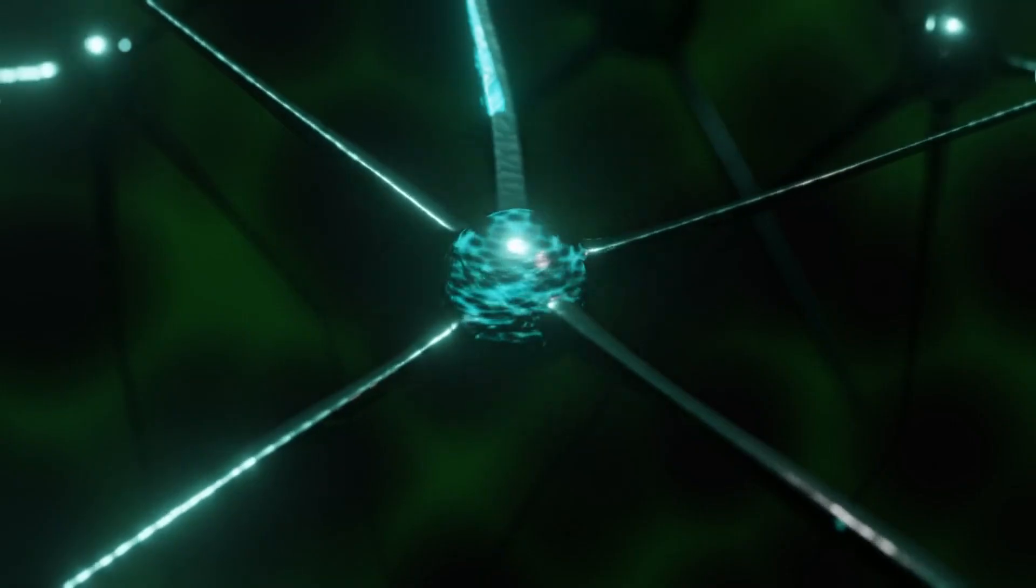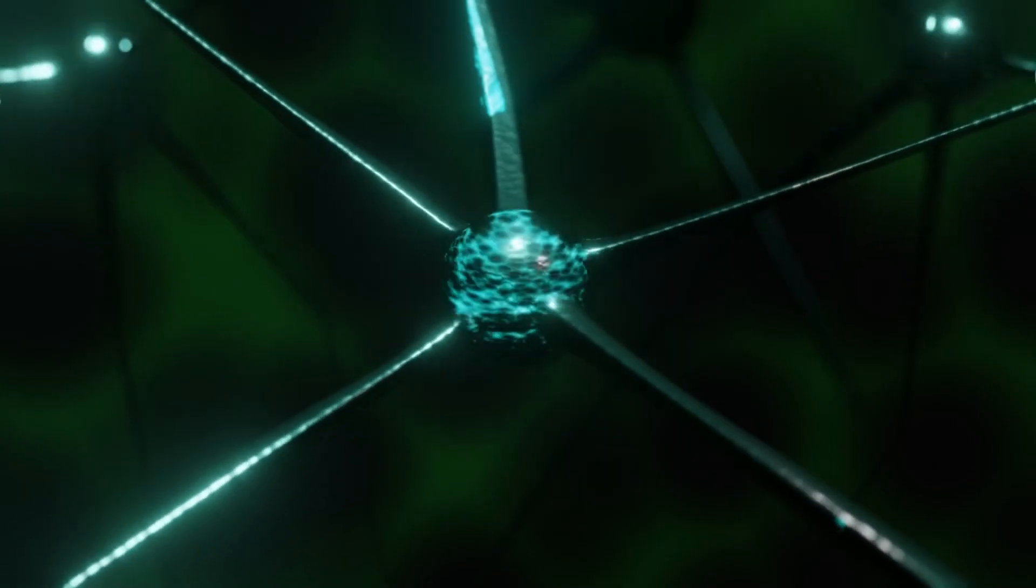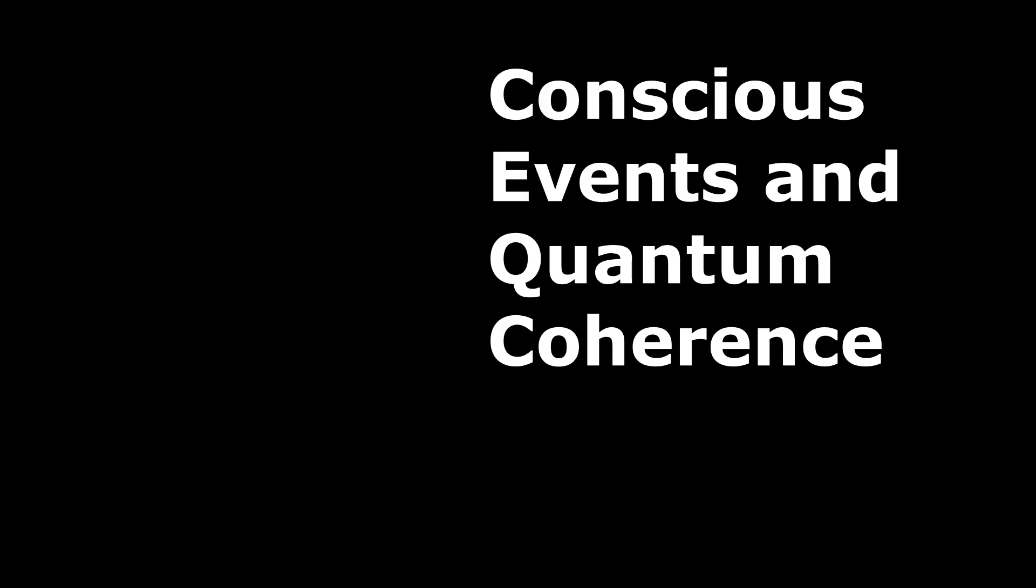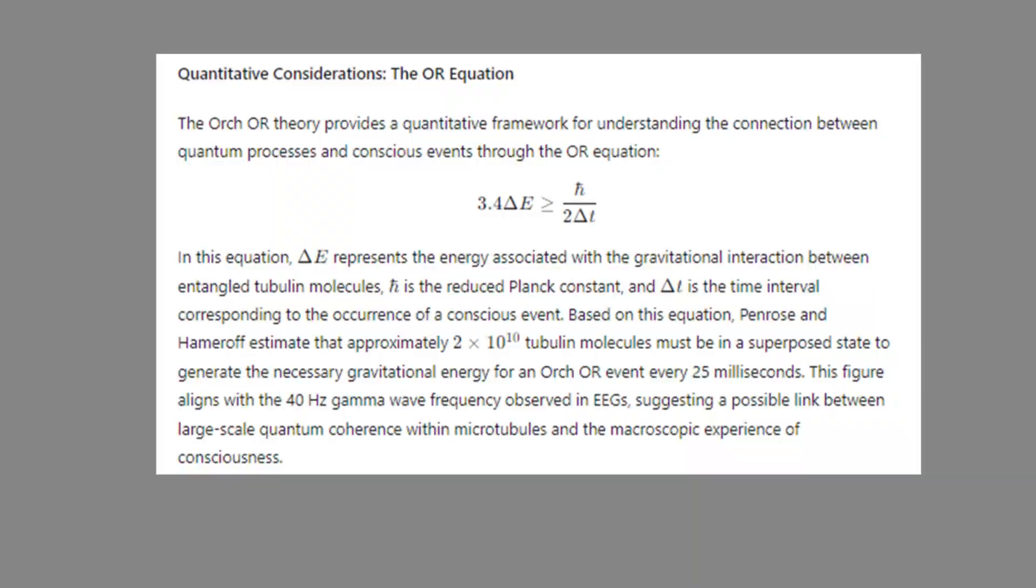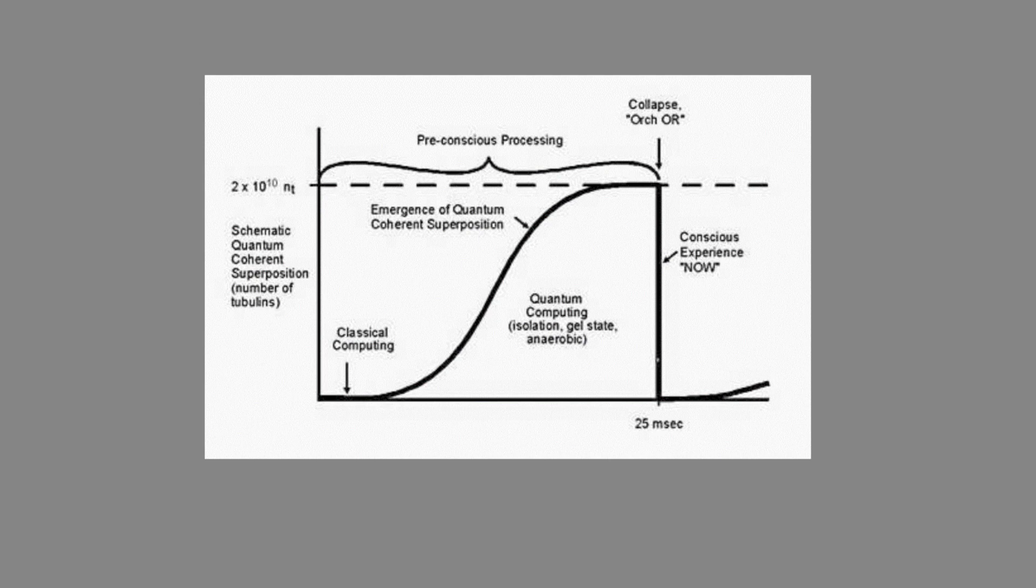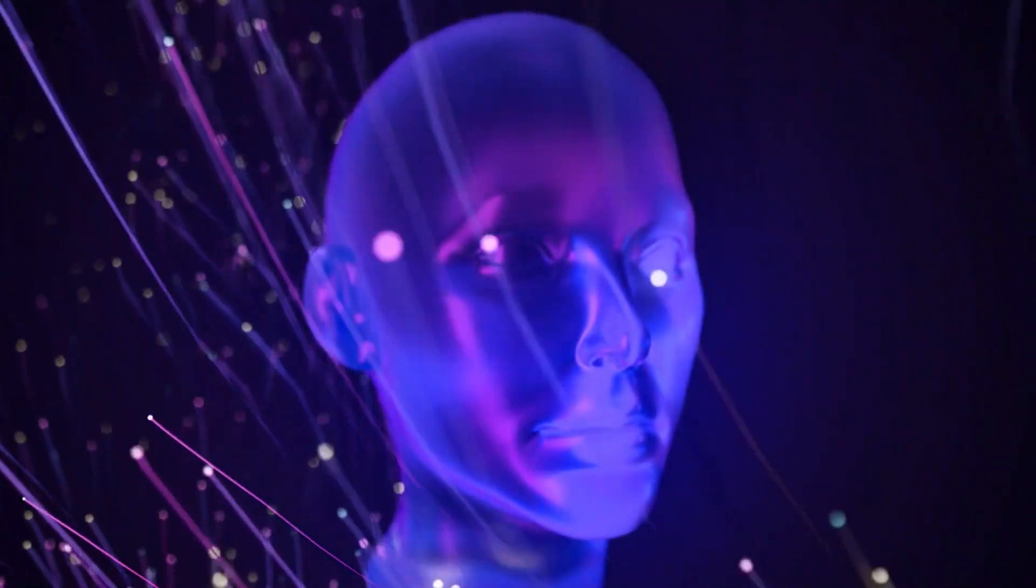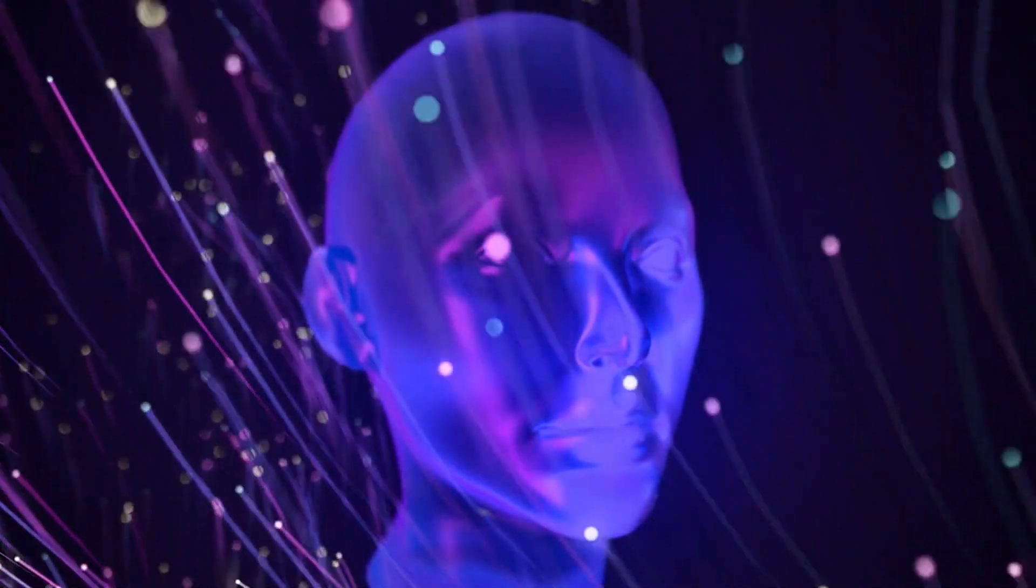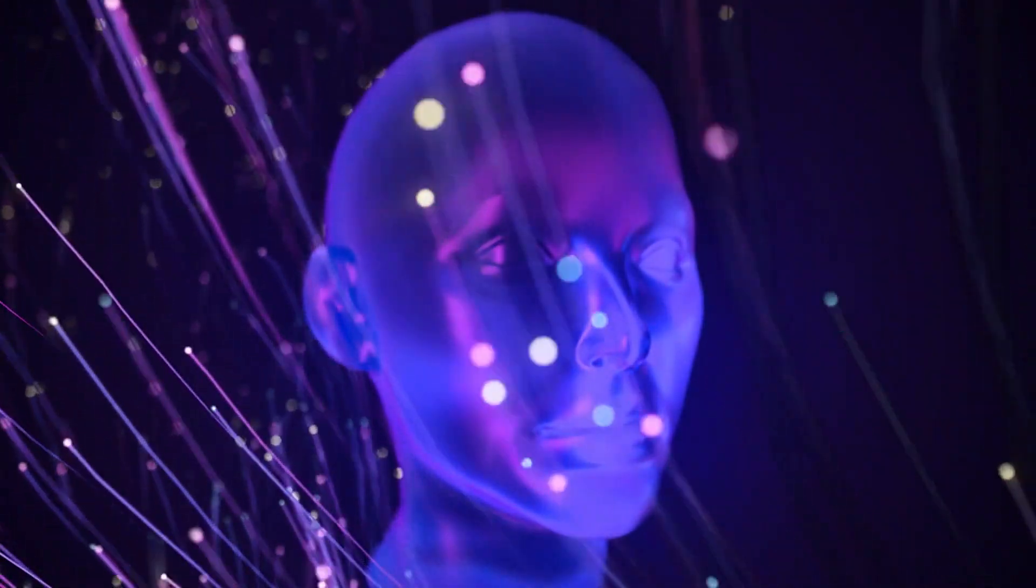According to the Orch-OR model, each 40 Hz cycle corresponding to a quantum state collapse represents a discrete conscious event occurring approximately every 25 milliseconds. The Orch-OR model also provides a visual representation of this process, where the vertical axis represents the number of overlapping tubulin molecules, and the horizontal axis represents time. As time progresses, the number of entangled tubulin molecules increases, leading to a corresponding increase in gravitational energy. When this energy reaches the threshold defined by the OR equation, the overlap collapses, resulting in a conscious event.